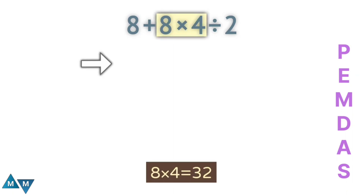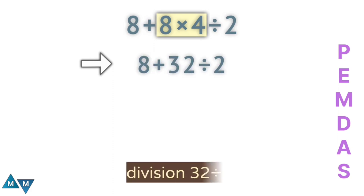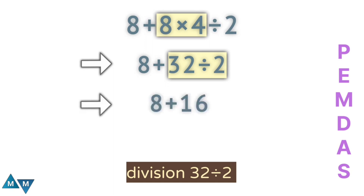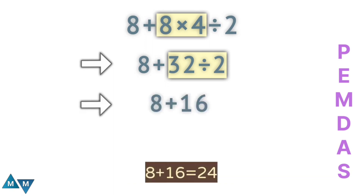Now we have the following expression. Our next move will be division: 32 divided by two, which equals 16. Now the expression becomes eight plus 16, which equals 24.